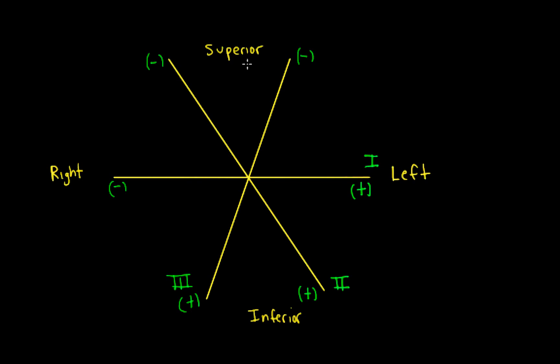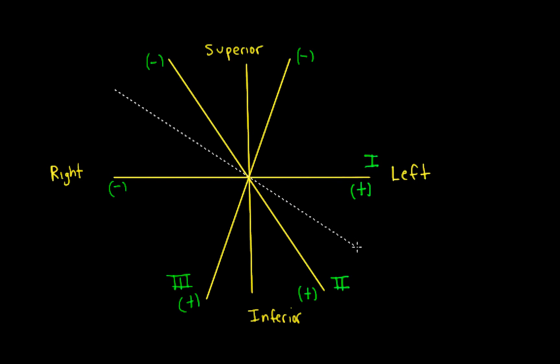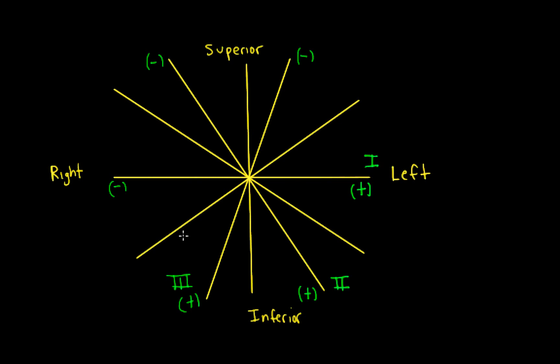We can now add the unipolar leads to the diagram. Perpendicular to lead 1 we have a unipolar lead, perpendicular to lead 3 we have a unipolar lead, and perpendicular to lead 2 we have a unipolar lead. These are labeled AVL on the left, AVR on the right, and AVF inferiorly. The L in AVL stands for left arm, the R in AVR for right arm, and the F in AVF for left foot, helping us remember where they're located.